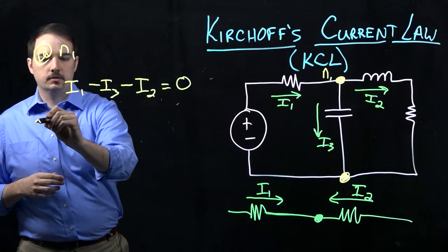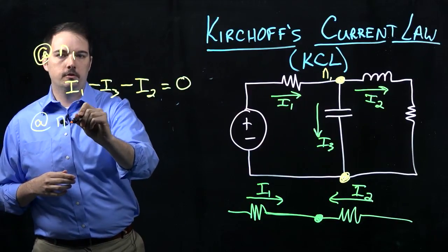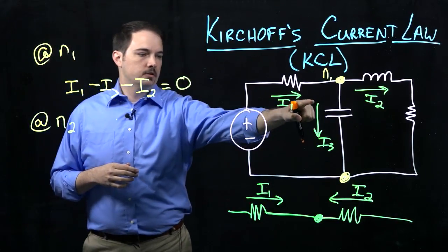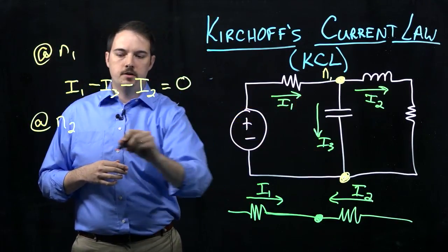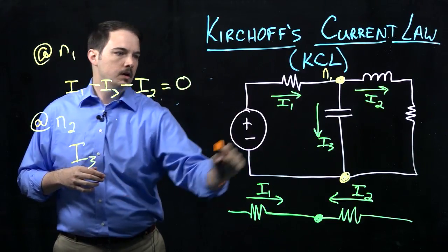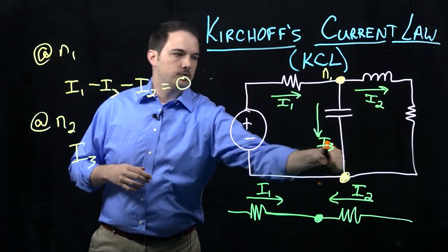Now, for sake of practice, let's look at the second node here, at node N2, and do the same thing. So I see I have current I3 coming in, so that would be a positive quantity. And then I have current I2 coming in, so positive quantity plus I2.